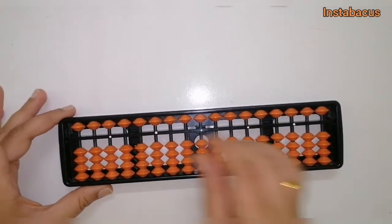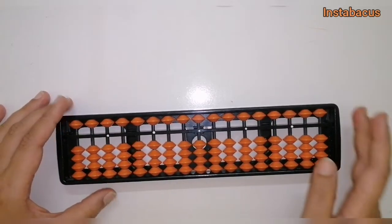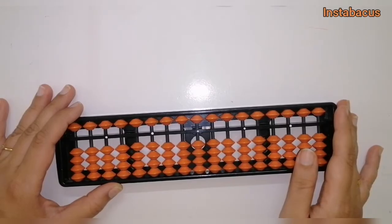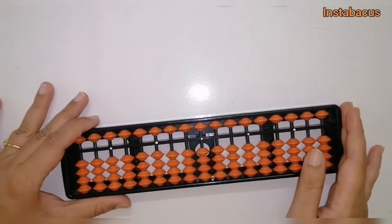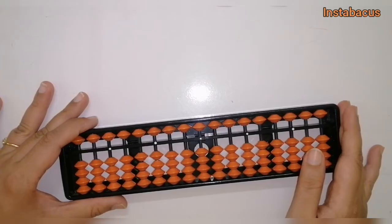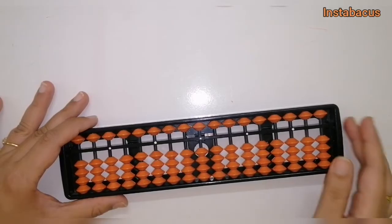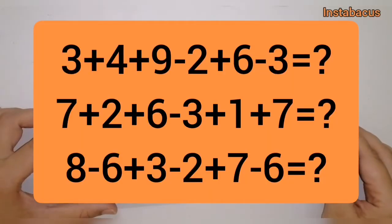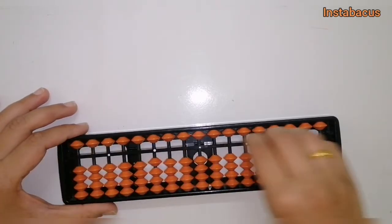Welcome to my channel Instabacus. Up till now we have learned everything about addition and subtraction on abacus — using big friends and small friends, simple addition, simple subtraction. Today we are going to do problems of addition and subtraction of single digit numbers together, up to six to seven numbers. For example: 3 plus 4 plus 9 minus 2 plus 6 minus 3, etc. Today we are going to solve three problems.